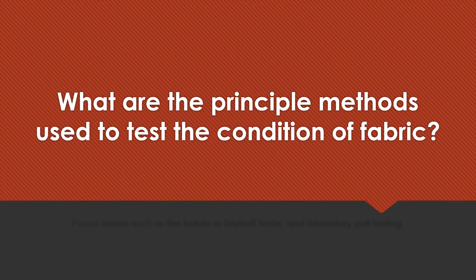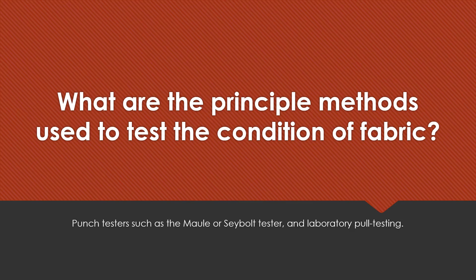What are the principal methods used to test the condition of fabric? Punch testers such as the Maul or Seyboth tester, and laboratory pull testing.